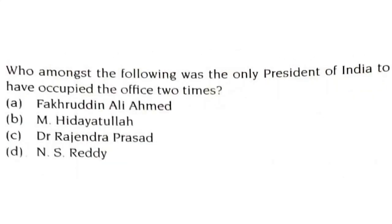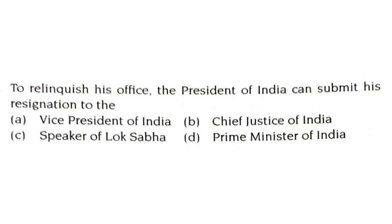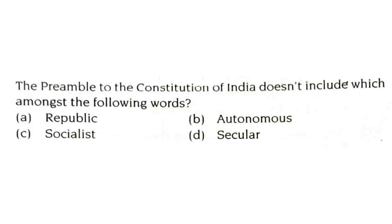Who amongst the following was the only president of India to have occupied the office two times? It is Dr. Rajendra Prasad. To relinquish his office, the president of India can submit his resignation to the Vice President of India. The preamble to the constitution of India does not include which word — it is autonomous.